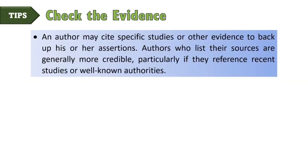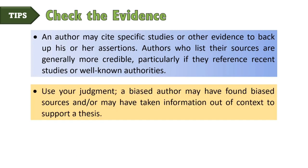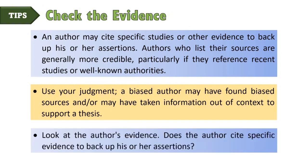Look at the author's evidence. An author may cite specific studies or other evidence to back up his or her assertions. Authors who list their sources are generally more credible, particularly if they reference recent studies or well-known authorities. However, use your judgment — a biased author may have found biased sources, or may have taken information out of context to support a thesis. Does the author cite specific evidence to back up his or her assertions?